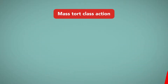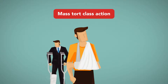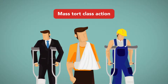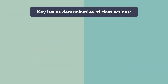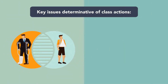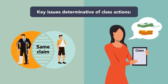The results that the representative plaintiffs obtain bind all other members of the class. For a mass tort class action, someone who was hurt by the product in question would act as the representative of all those similarly hurt. The key issues usually determinative of class actions are whether the group's claims are similar enough to treat as the same claim in class, and whether the class representative can be shown to be a good representative of the class's interests, and not just her own interests.